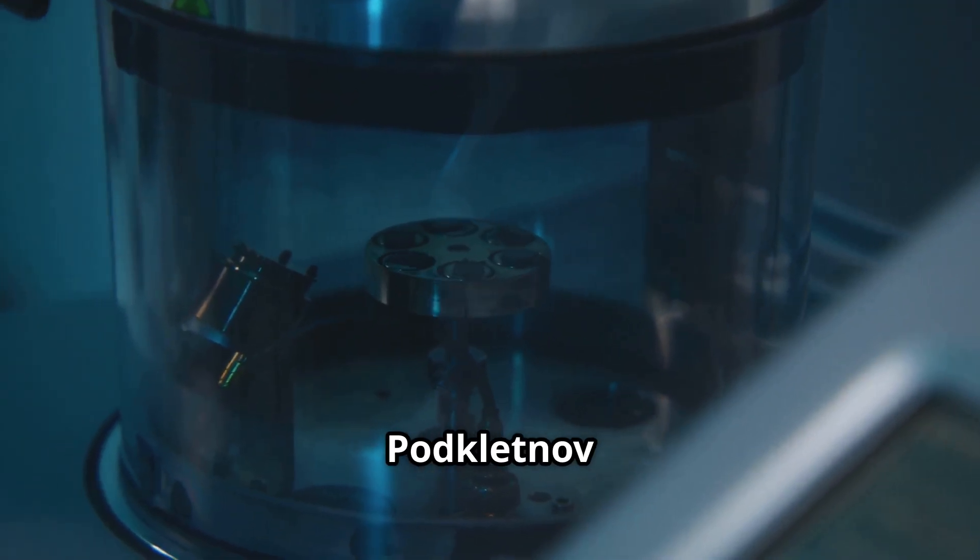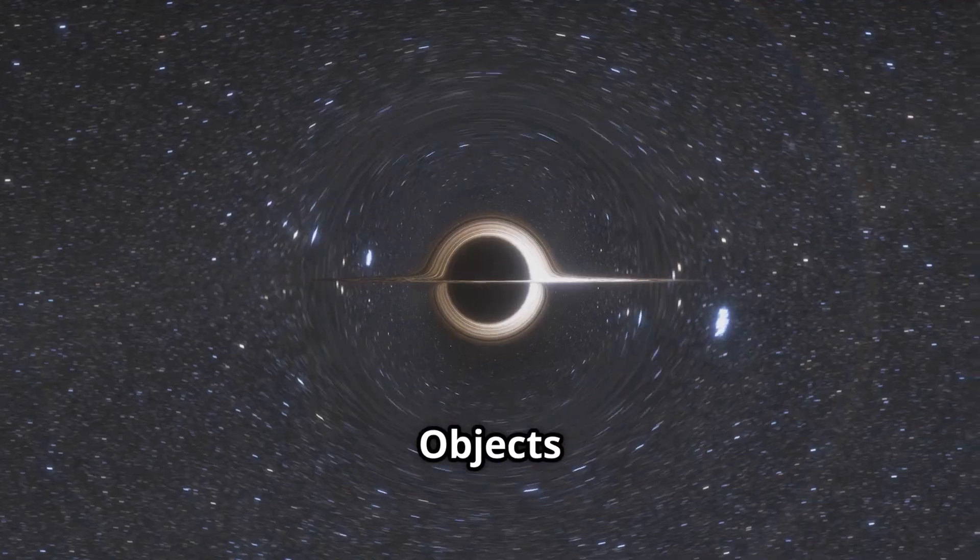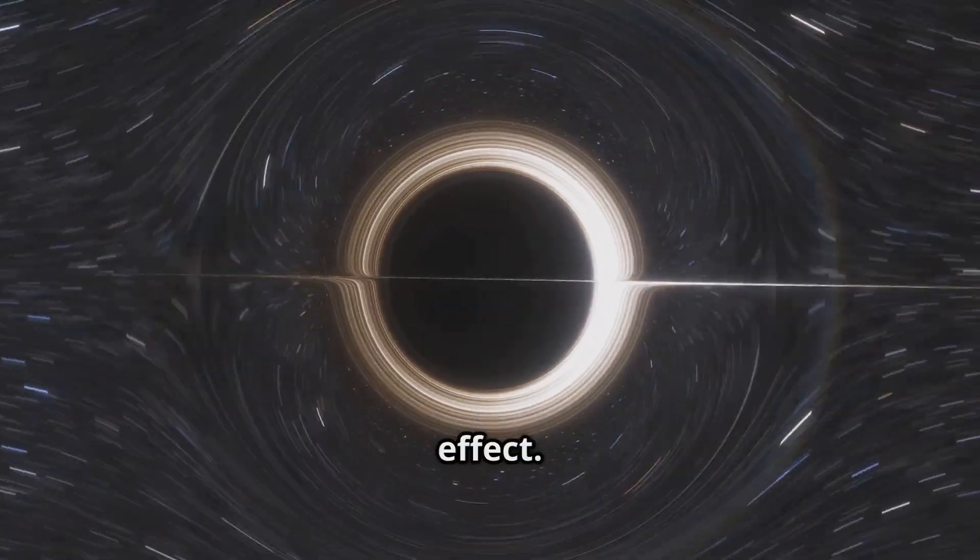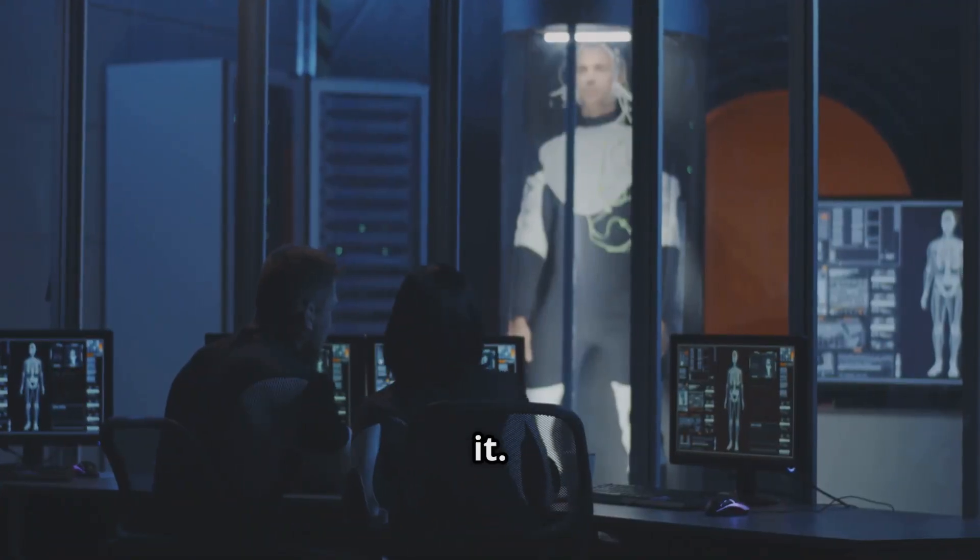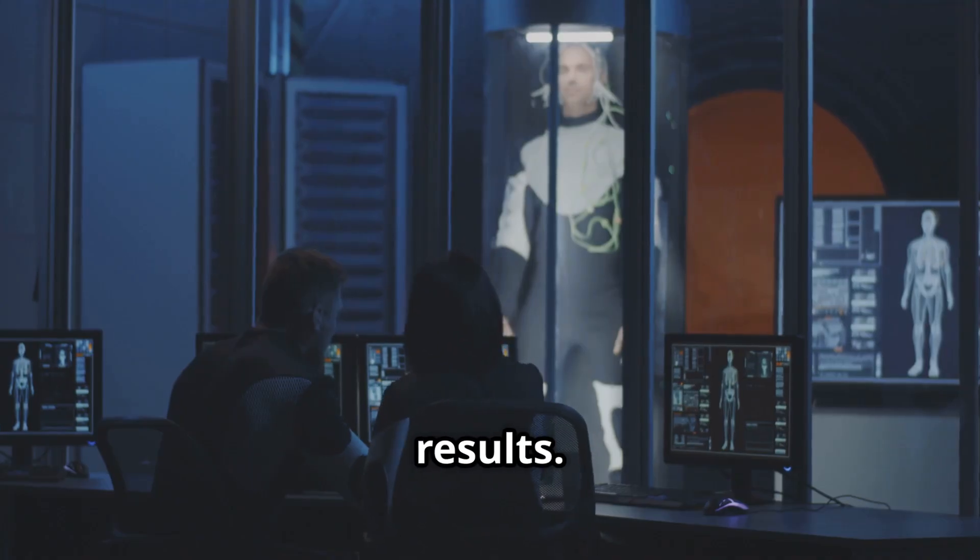Russian scientist Eugene Podklitnov claimed to reduce gravity using a spinning superconducting disk. Objects above the disk seemed to weigh less. Not full anti-gravity but a weakening effect. NASA tried to replicate it. Despite numerous attempts by skilled teams, no one could reproduce the results.